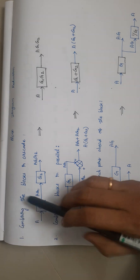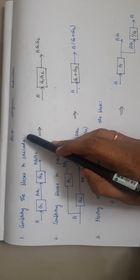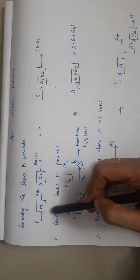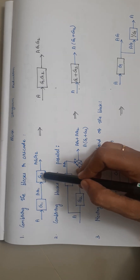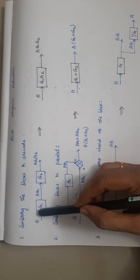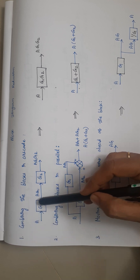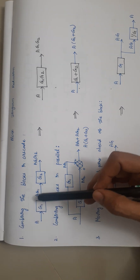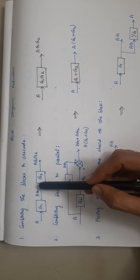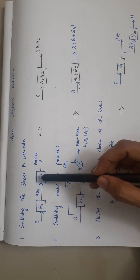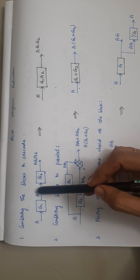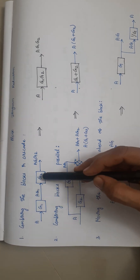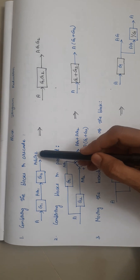Our first rule is combining the blocks in cascade. Cascade is nothing but elements in series. Here we have two blocks — G1 and G2. The input signal given to G1 is A. So the output from block G1 is A multiplied by G1, which is A·G1. This output is then given as input to block G2, and when multiplied we get A·G1·G2 as the respective output.